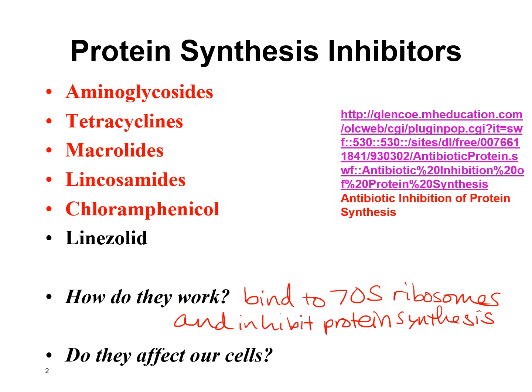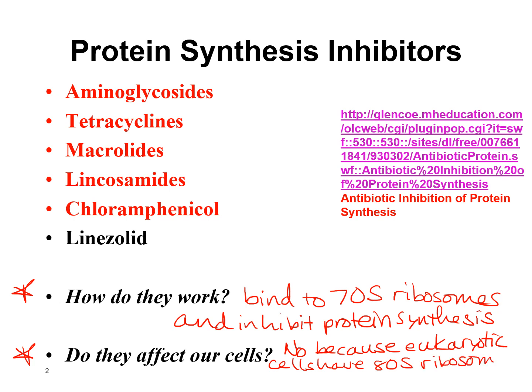For the exam, also note: do these antibiotics affect our cells? They don't affect eukaryotic cells because our cells have 80S ribosomes, and these antibiotics do not bind to 80S ribosomes. The only way they could cause problems is if they bind to the 70S ribosomes in our mitochondria, which could potentially cause some side effects. But in general, these antibiotics don't affect our cells.